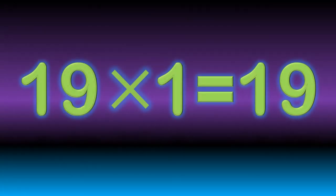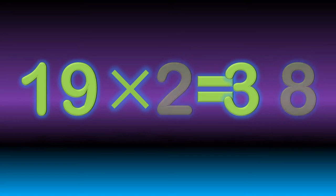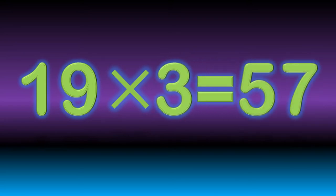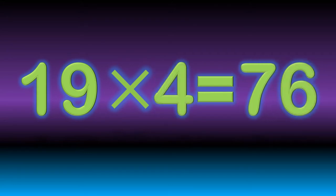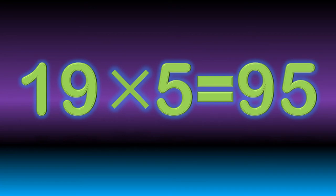19 ones are 19. 19 twos are 38. 19 threes are 57. 19 fours are 76. 19 fives are 95.